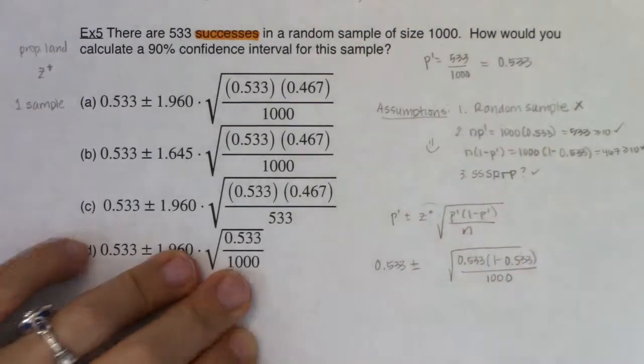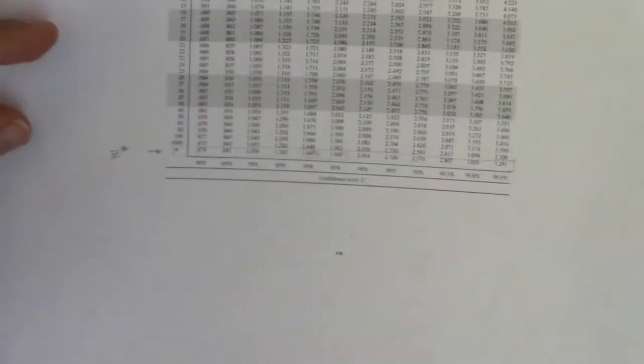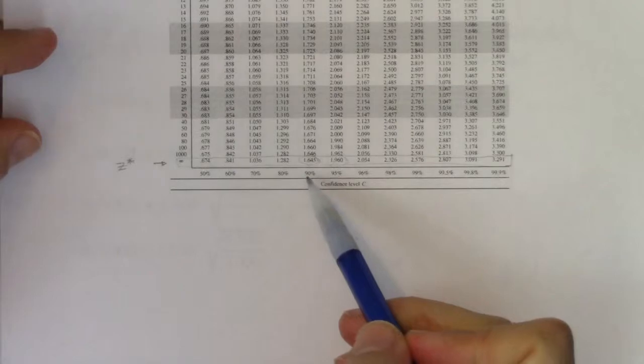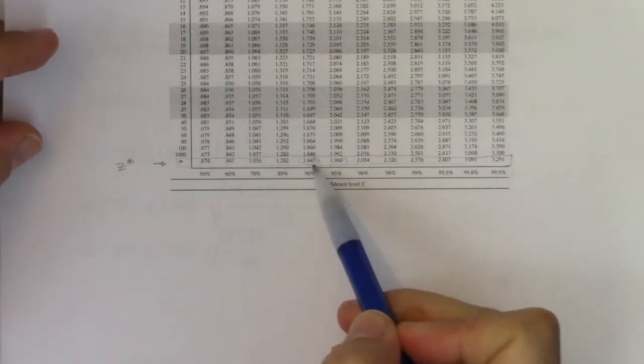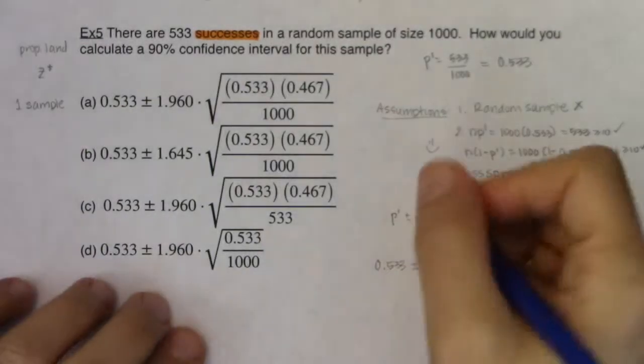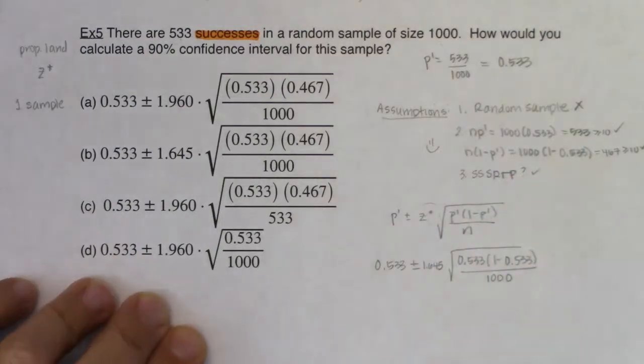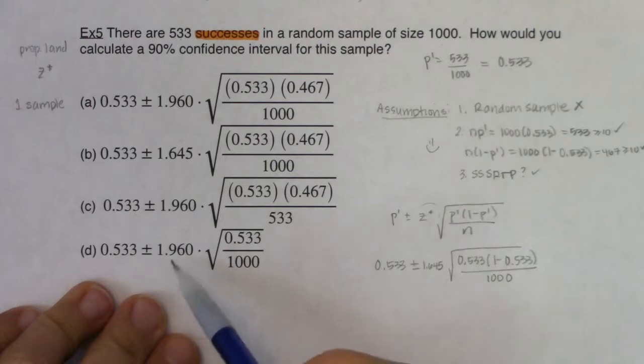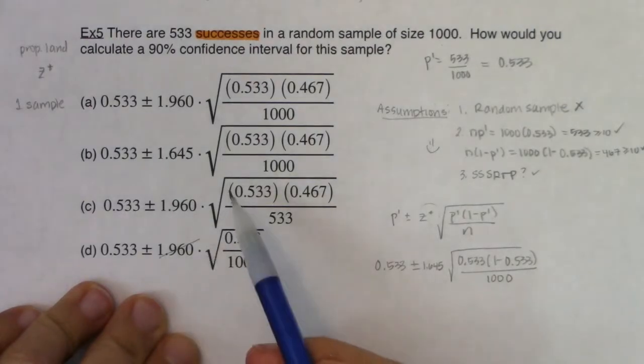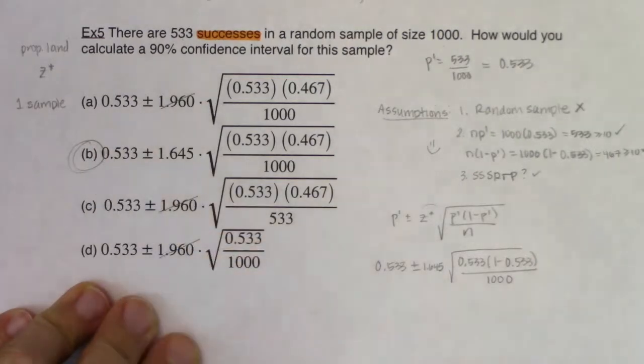Now for the z star number, let's go see what we're working with. I've got a 90% confidence level and if I'm z starring it, it's always at this bottom row. So it looks like I've got a 1.645 there. So let's see if we can start to figure out what our answers are. At this point, you could spot it. This is not the right critical value, not the right one, not the right one. B has got to be my answer.